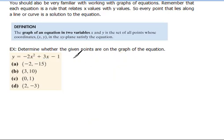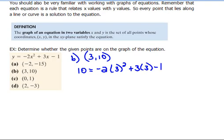Now let's do the next one, b. b says the point 3 comma 10. So let's try the same thing. If we were to replace the y value with 10 and every x value with 3, we would have negative 2 times 3 squared plus 3 times 3 minus 1.